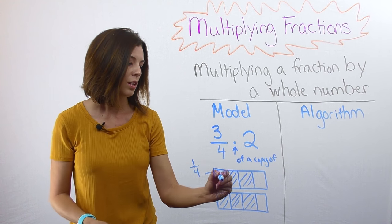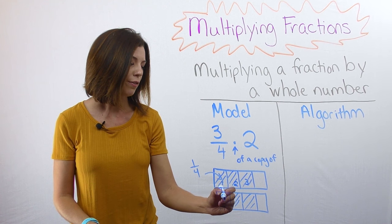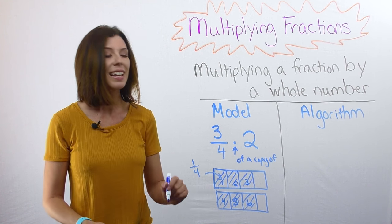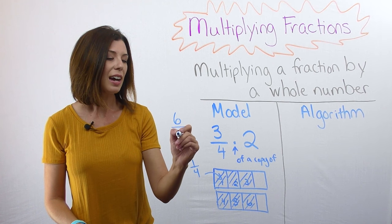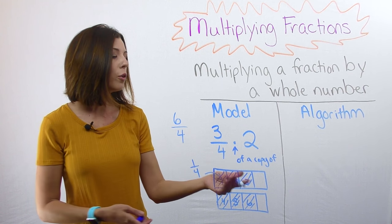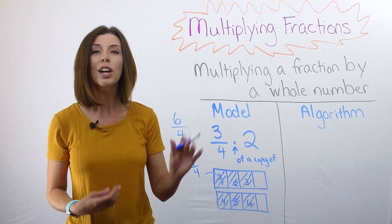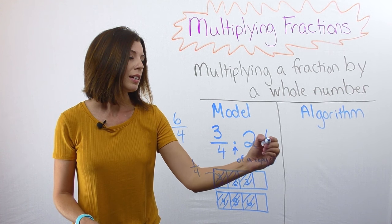I have one, two, three, four, five, six. I have six copies of one-fourth that are currently shaded. So my answer would be six-fourths.